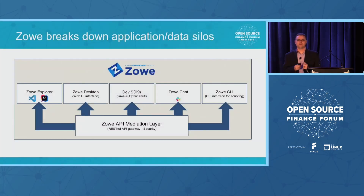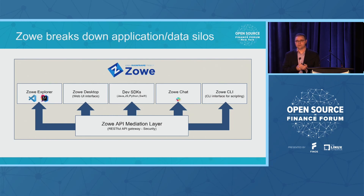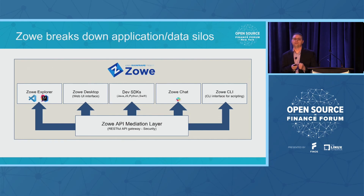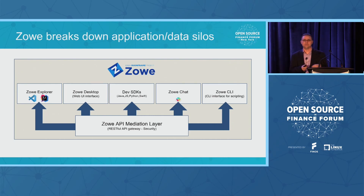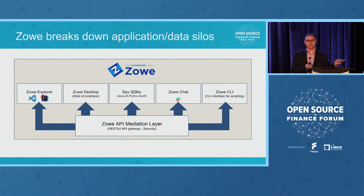One project we host that's been around for a while is called Zoe. Zoe came out of the idea of how can we make it easier to get out to ZOS applications and data — not using green screens, not using 3270 terminals, not using older technologies — but using modern REST APIs, command line interfaces, modern web desktop applications, and integrating into development environments. This project has been seeing tons of uptick over the past couple of years. Surveys show usage of Zoe within the mainframe customer base is doubling year over year. If you have mainframes and you're not paying attention to this, keep it on your radar.